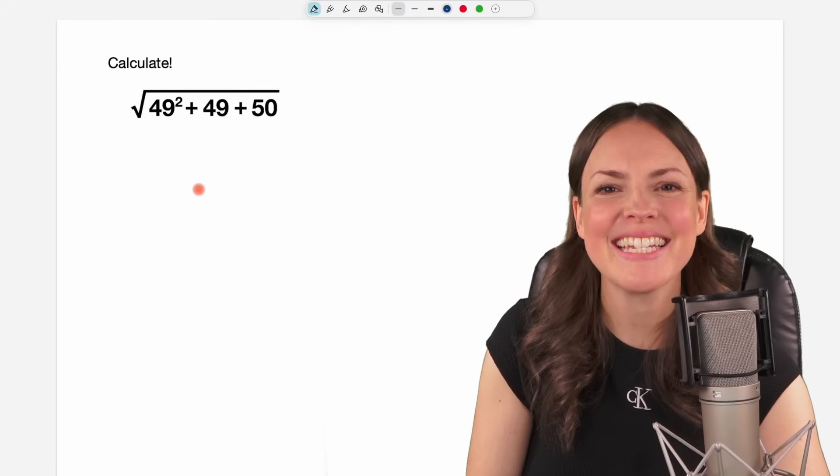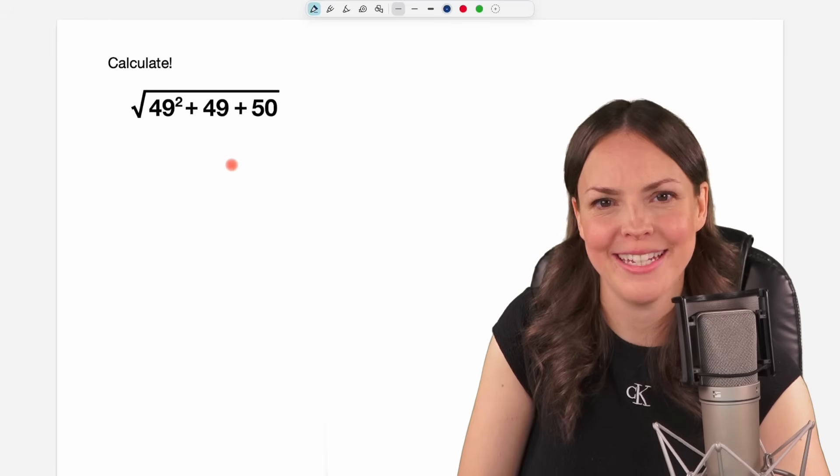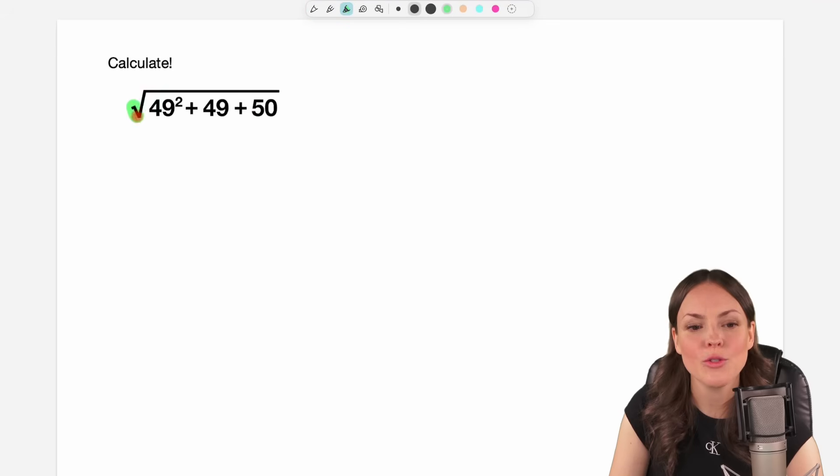Hello my lovelies, it's Susanna and today I want to show you how to calculate this without a calculator. We have the square root of 49 squared plus 49 plus 50.